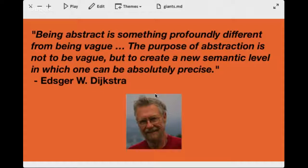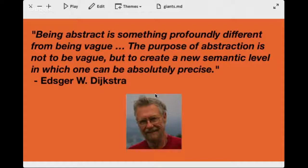Though these different concepts may seem like vague abstractions, it's important to understand — and Dijkstra says this better than I would — that abstracting is not about being vague at all. It's about defining a new level, a new way of thinking, so that you can precisely define what you're talking about. This is what FP is all about: digging deeper into how you define your problems and the components you're building. FP forces you to be very precise about what you're doing, and the benefits are quite amazing.